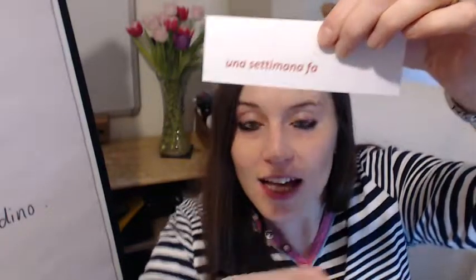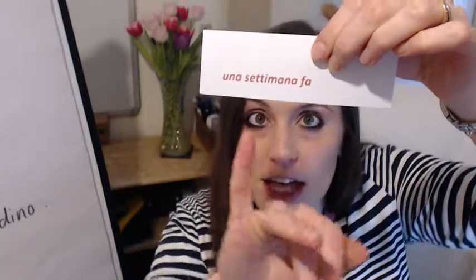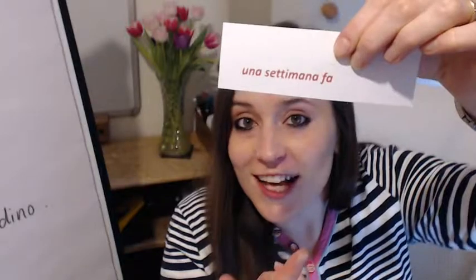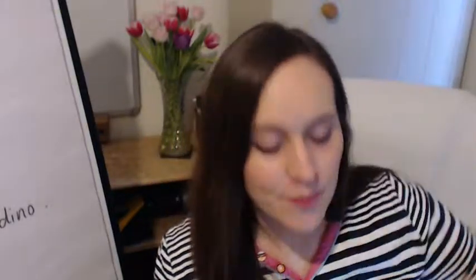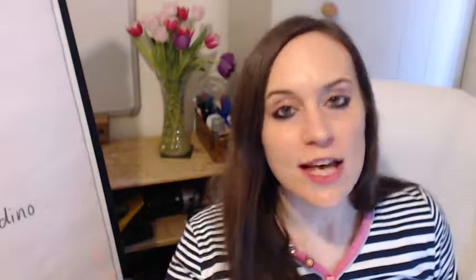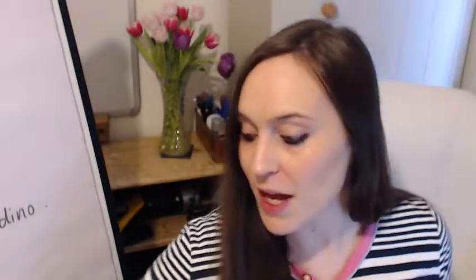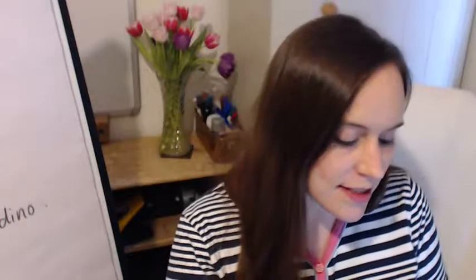Because una settimana is a feminine noun — una instead of uno because it's feminine. Settimana has an A at the end, so it's a feminine noun, so due settimane. If you're saying five weeks ago, settimana becomes settimane. Whereas in English we just pop an S at the end, settimana changes to settimane. All these phrases — three weeks ago, two days ago, five minutes ago — have fa at the end.